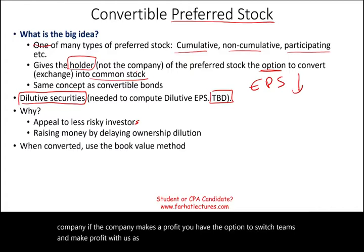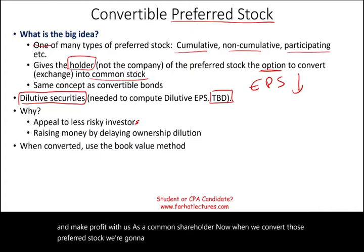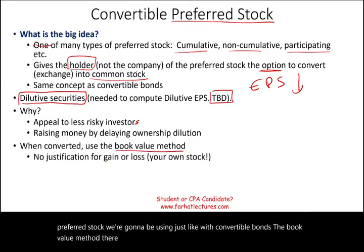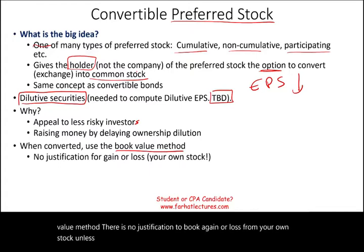When we convert those preferred stocks, we're going to use the book value method, just like with convertible bonds. There is no justification to book a gain or a loss from your own stock — unless, of course, you are Enron. That's what they did: they would buy and sell their own stock and book a gain.